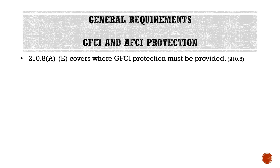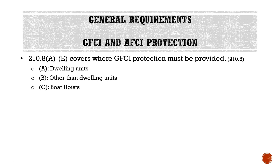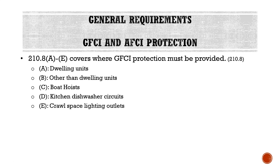Moving on to GFCI and AFCI protection. Section 210.8A through E covers where GFCI protection must be provided for different types of occupancies. Part A covers dwelling units, Part B is other than dwelling units, Part C covers boat hoists, Part D covers kitchen dishwasher circuits, and Part E covers crawlspace lighting outlets.